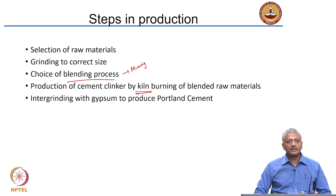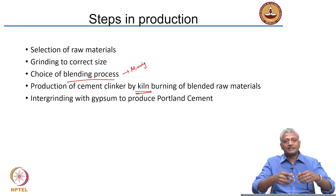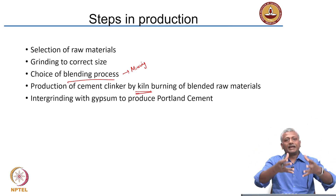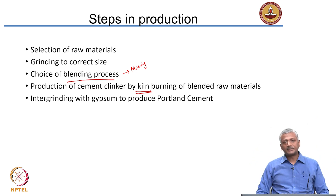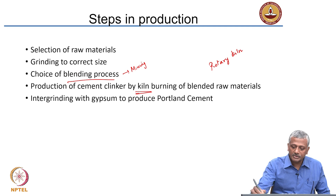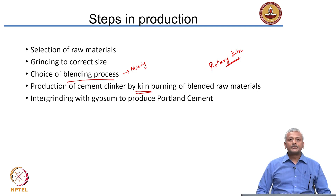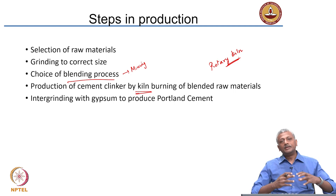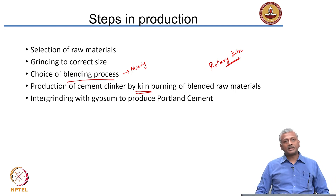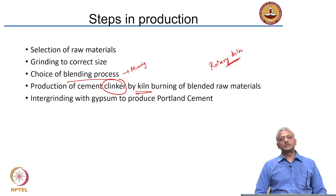Brick kilns were vertical kilns — you load the material at the bottom, heat is applied, gases go out of the top, and you take out the burnt material. But in cement it is not the same. You use what is called a rotary kiln. I will show you a schematic of that later. You mix the raw materials together and burn them in a rotary kiln.